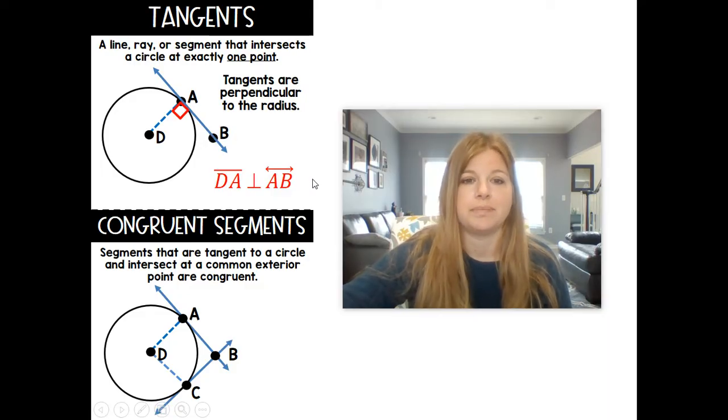A congruent segment. Now, segments that are tangent to a circle and intersect at a common exterior point are congruent. So here I have two tangents to this circle. Tangent AB, same thing with line AB here, and tangent which is line BC.